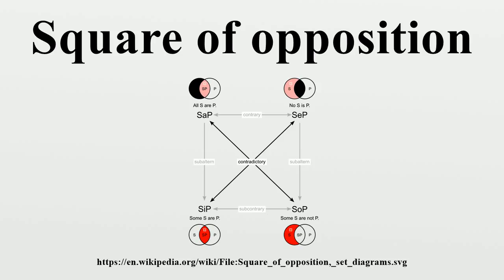The particular is the subaltern of the universal, which is the particular's superaltern. For example, if 'every man is white' is true, its contrary 'no man is white' is false. Therefore the contradictory 'some man is white' is true. Similarly the universal 'no man is white' implies the particular 'not every man is white'.